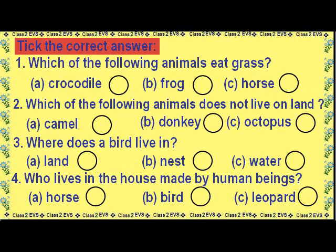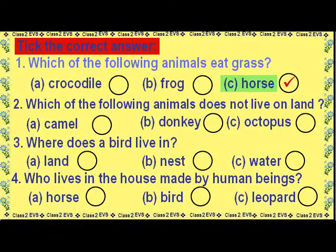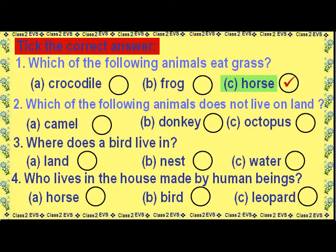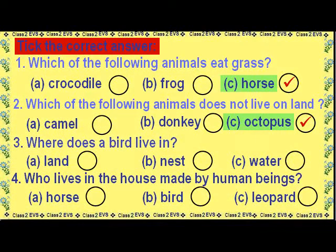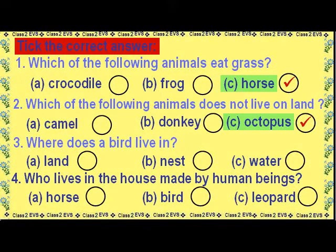Tick the correct answer. Which of the following animals eats grass? Crocodile, Frog, or Horse — The correct answer is Horse. Which of the following animals does not live on land? Camel, Donkey, or Octopus — The correct answer is Octopus. Where does a bird live? Land, Nest, or Water — The correct answer is Nest. Who lives in the house made by human beings? Horse, Bird, or Leopard — The correct answer is Horse.